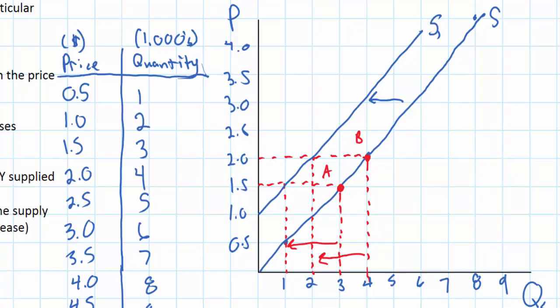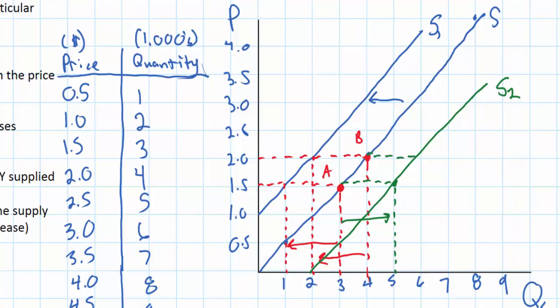An increase in supply is illustrated as an outward shift in the supply curve from S to S2. An increase in supply implies that at every price, a greater quantity of energy drinks would be supplied than previously. Instead of 3,000 energy drinks being supplied at $1.50, now 5,000 drinks are supplied. And instead of 4,000 drinks being supplied at $2, now 6,000 energy drinks are supplied. An increase in supply occurs when the supply curve shifts to the right; a decrease in supply occurs when it shifts to the left.